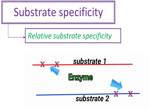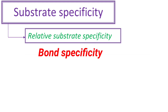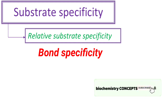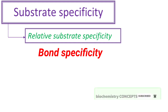The second type of relative substrate specificity is bond specificity. Enzymes act on more than one substrate containing a particular type of bond. For example, glycosidases act on glycosidic bonds. This can be understood with salivary alpha-amylase, which acts on alpha-1,4 glycosidic bonds.